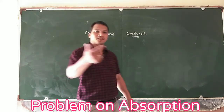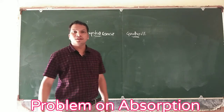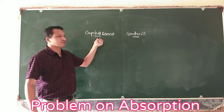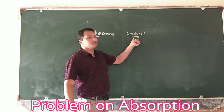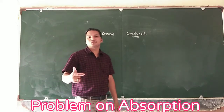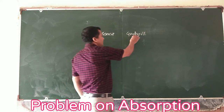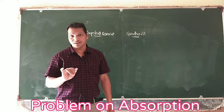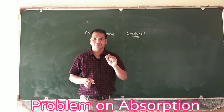In an amalgamation, we have two companies. We sell one company's goodwill and the other results in capital reserve. In our analysis, we know what goodwill is — when the purchase consideration paid exceeds the net assets, the excess is goodwill. If the net assets exceed the purchase consideration, the difference is capital reserve.